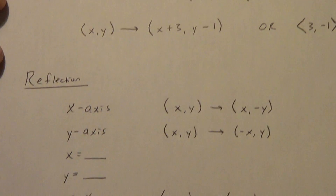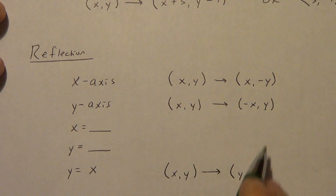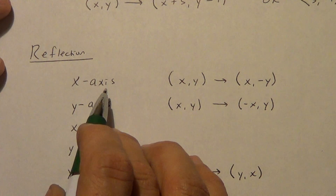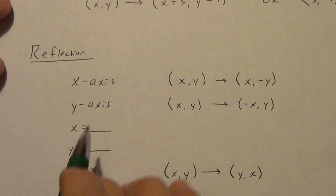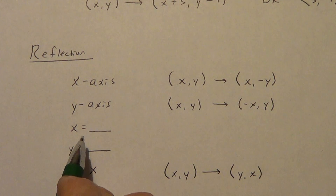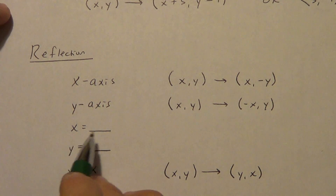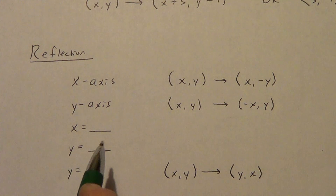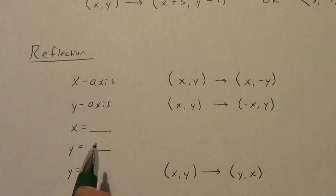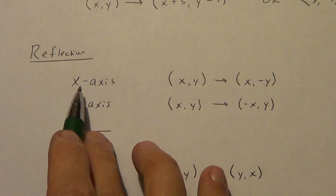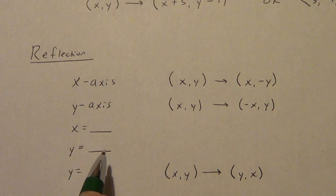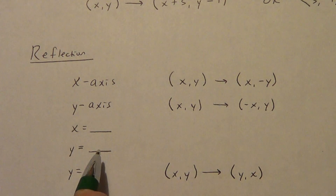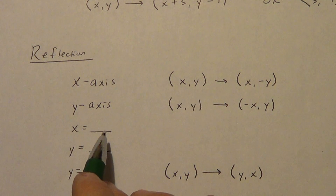Now, a reflection. There are a couple of different reflections. You do not need to memorize this — I'm just showing you how this could happen. You can reflect in the x-axis, you can reflect in the y-axis, you can reflect in a vertical line — remember Hoy and Vux? A vertical line is x equals a number, like x equals 2. You could also reflect across a horizontal line like y equals negative 5. Keep in mind the x-axis is y equals 0, and the y-axis is x equals 0.